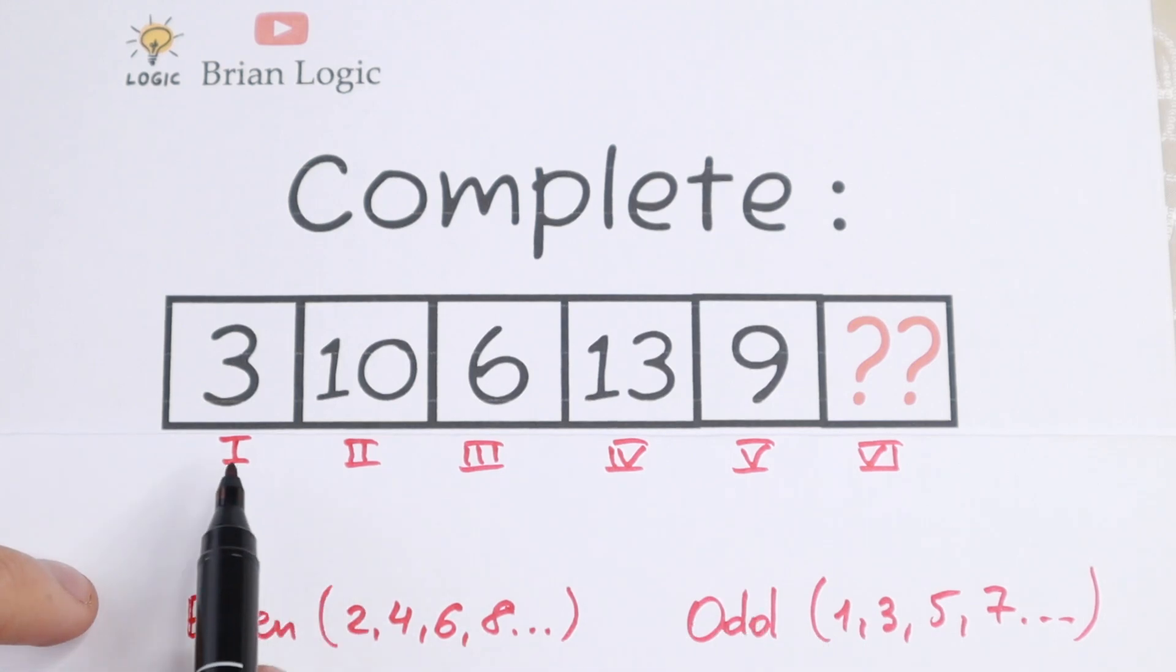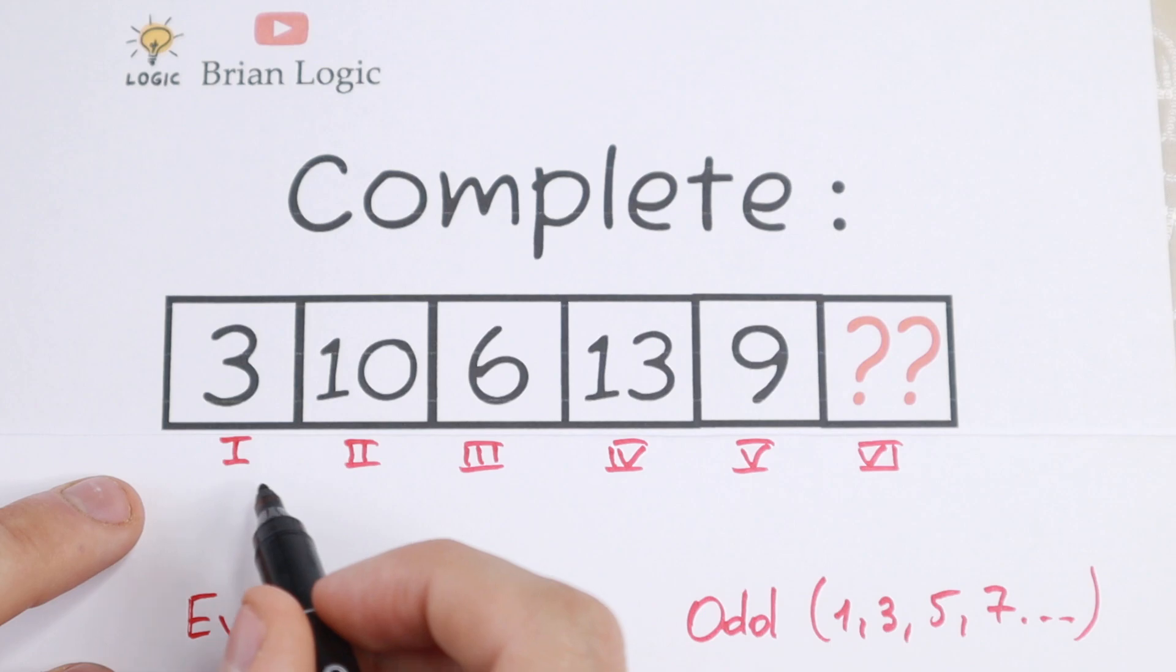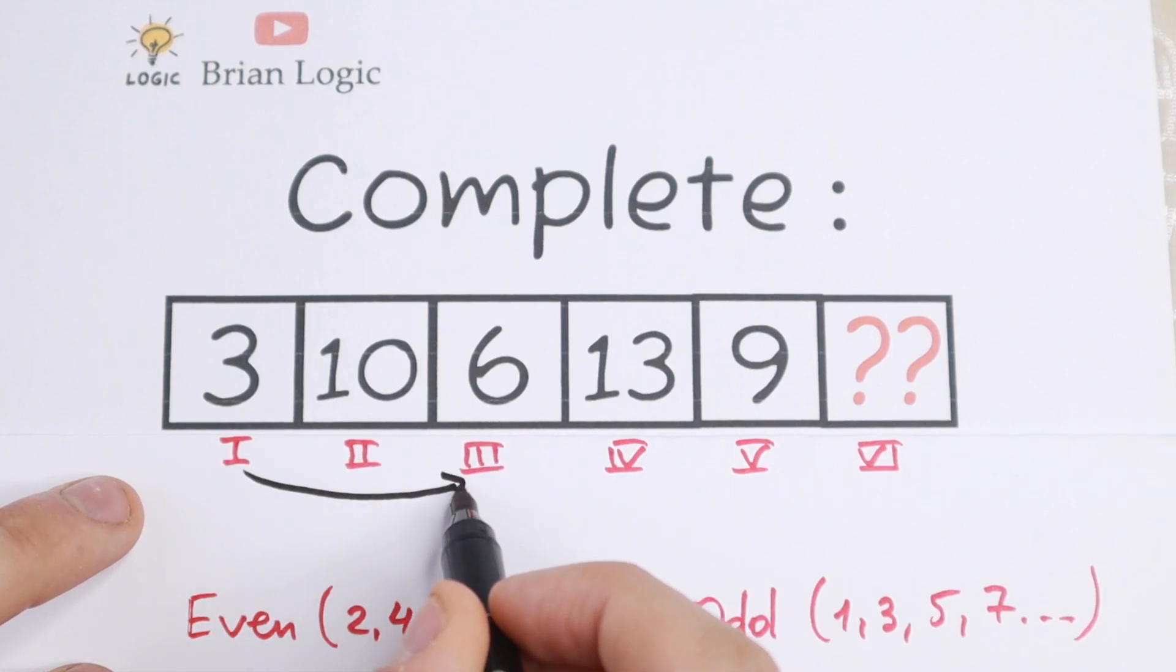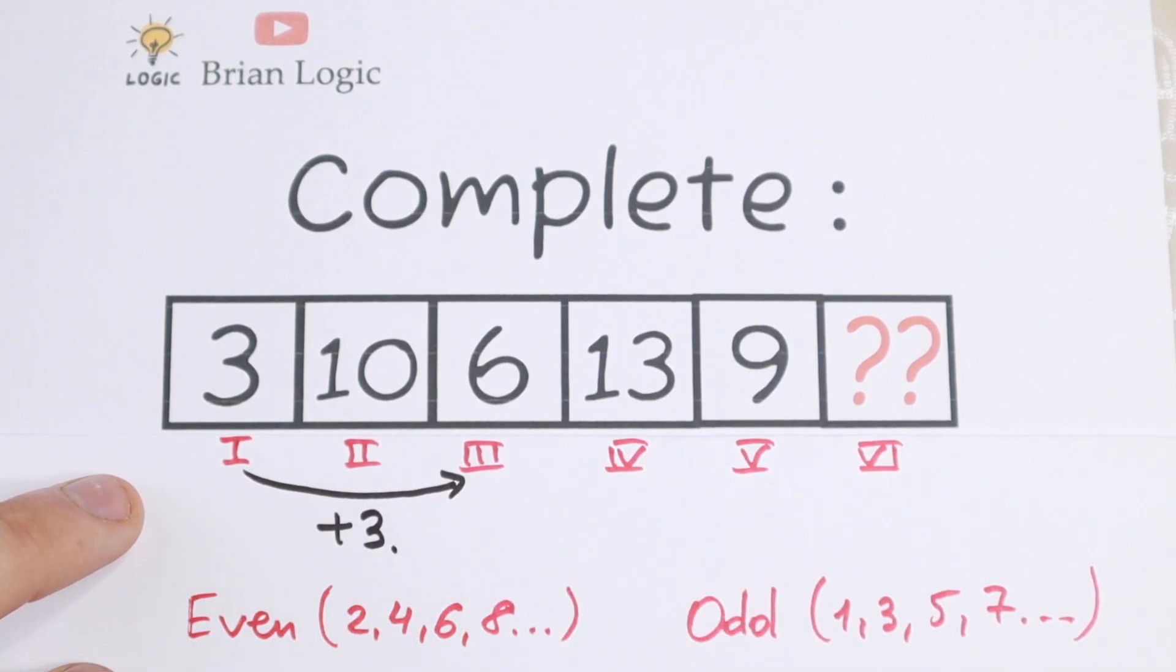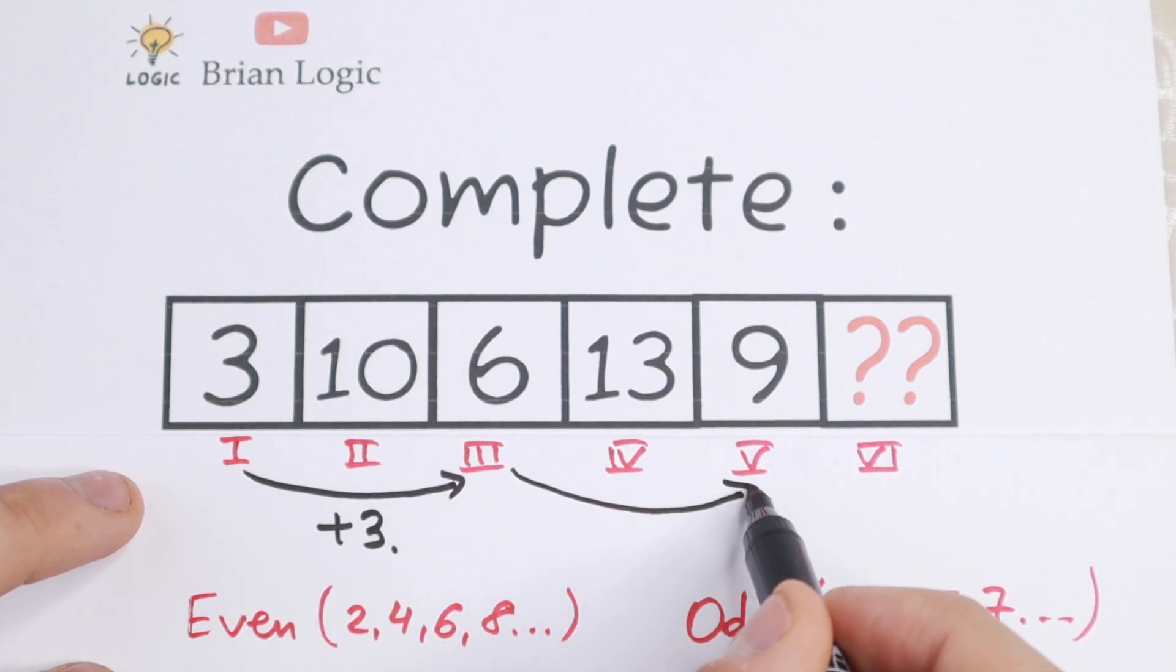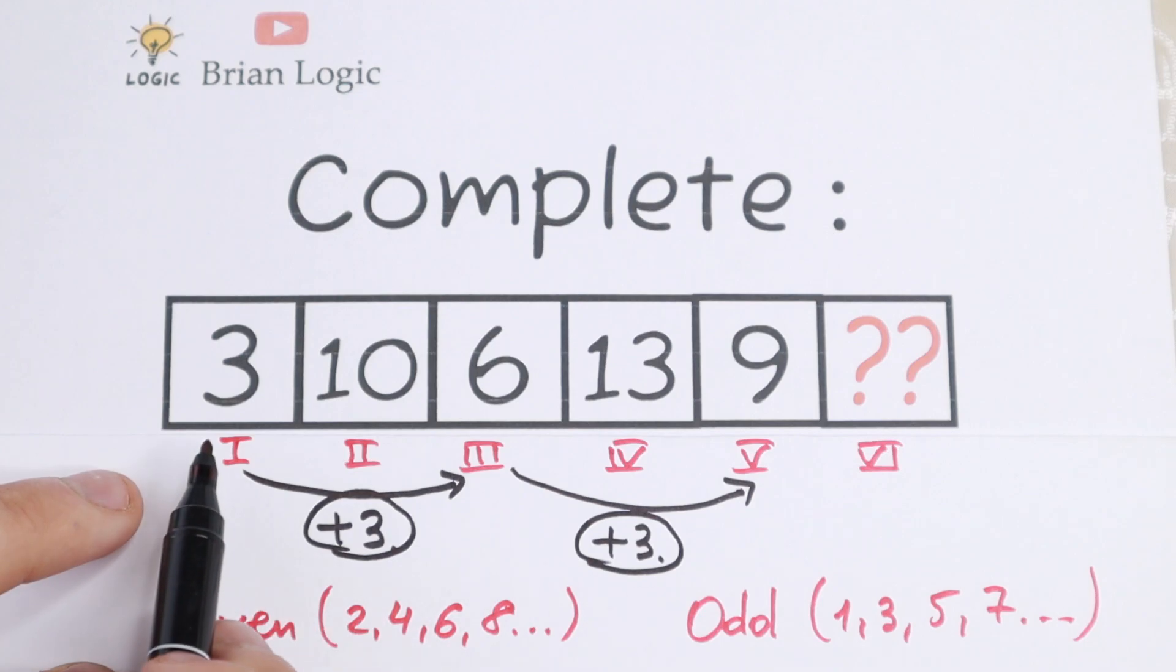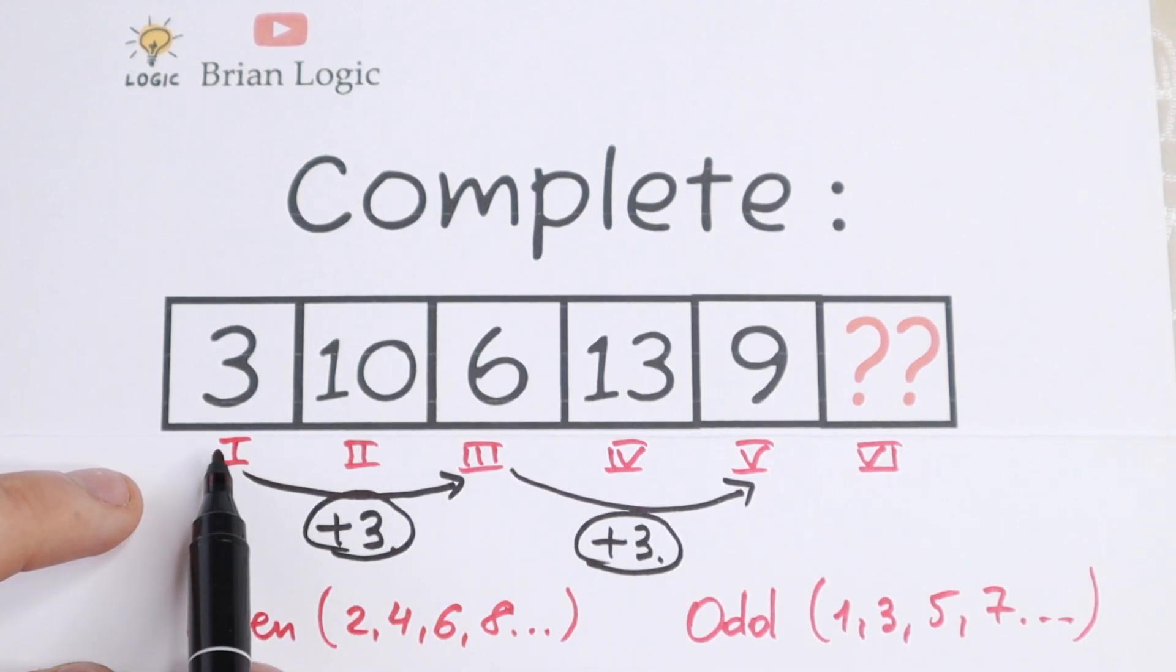I see a pattern between odd positions. We have position 1 and position 3. What do we need to do with this 3 to get the next odd position value, 6? We need to add 3. I hope you see this pattern. Moreover, the next odd position is 5, and the fifth number is 9. So we need to add 3 to this 6 as well. As you can see, we need to add 3 to these positions, and so on.